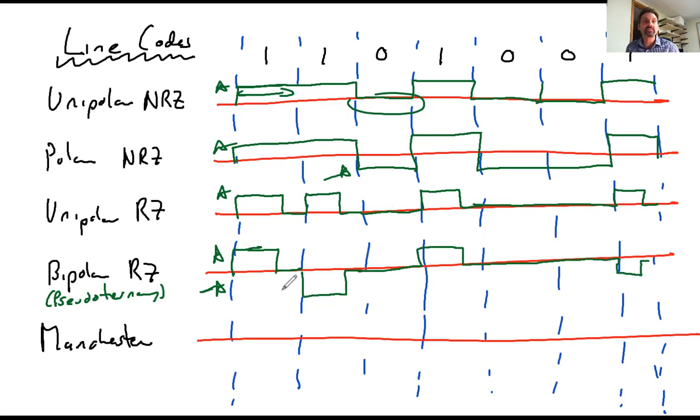And then last but not least, Manchester, for a 1, it's high and low, high and low, but if you're a 0, it's low and high, high and low, low and high, low and high, high and low. So that's Manchester, also between minus A and A. So that's line codes.